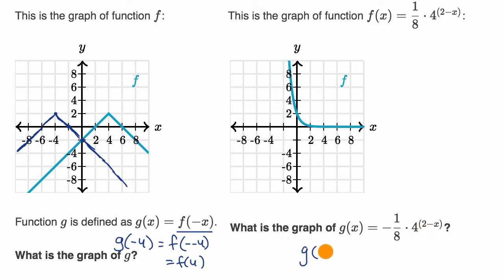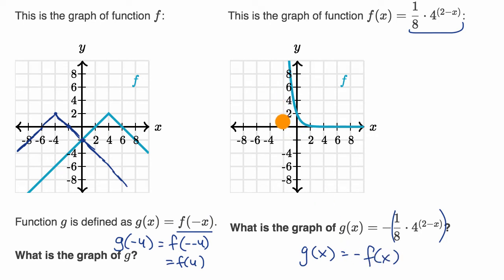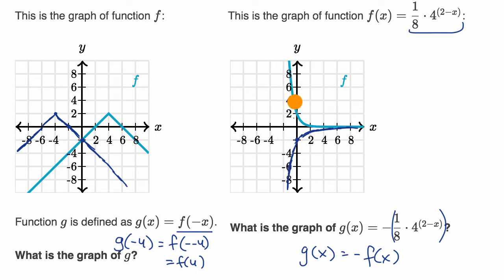We could rewrite g of x like this: g of x is equal to the negative of f of x. So instead of f of negative x, it's equal to the negative of f of x. One way to think about it is we can see that f of zero is two, but g of zero is going to be the negative of that, so it's going to be equal to negative two. Whatever f of a certain value is, g of that value would be the negative of that, so g of x would be a reflection of f of x about the x-axis.